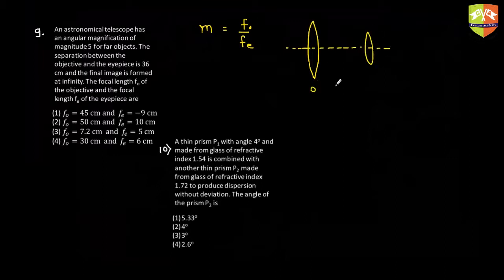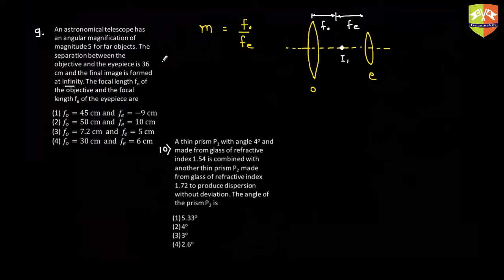This is the objective and this is the eyepiece. It is an astronomical telescope, so it looks at far away objects — objects are at infinity — so the image gets formed at the focus of the objective. This is the intermediate image I1, so this distance equals fo. The final image is formed at infinity, so this distance equals fe. The separation between objective and eyepiece is 36 cm, so fo + fe = 36, and magnification is given as 5.